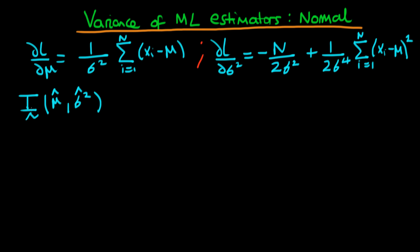The first of the components we're going to derive is actually going to be the off-diagonal element of the information matrix, or the estimator for the information matrix. In order to derive these terms, what we do is we take the second differential of our likelihood.